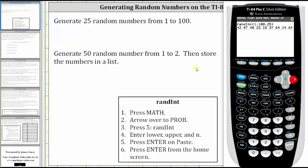So for the second example, we're asked to generate 50 random numbers from 1 to 2, and then store the numbers in a list. This example might be a model of flipping a coin 50 times, where 1 equals heads and 2 equals tails.